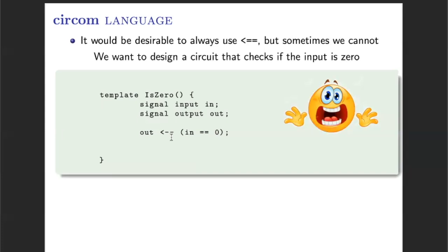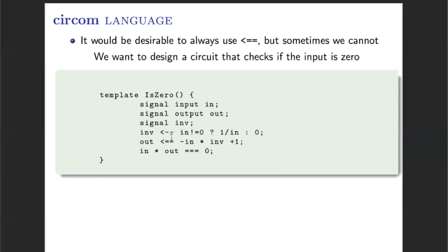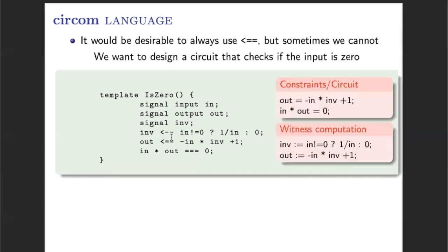The actual solution for this problem is one where we combine the use of the single-arrow, double-arrow, and equality operators. In this case, the two representations that we are generating are equivalent and have the expected behavior. For example, we can see that in case the input is zero, the first constraint forces the output to be one. And in case the input is not zero, the second one forces the output to be zero.